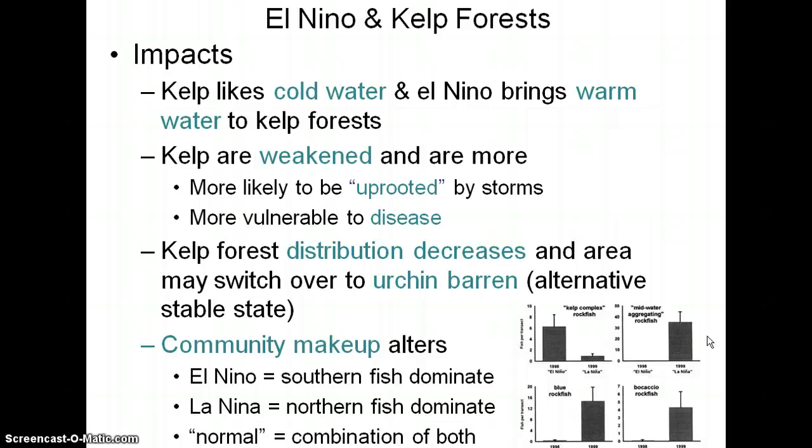Some kelp forests may actually switch to an urchin barren — that's the alternative stable state. The makeup of the community will also change: during El Niño, you get a lot of warmer-water southern fish that will come up into kelp forests. Then in La Niña, you'll get colder-water northern fish that come down and dominate. Normally you get a combination of both, but La Niña brings colder water down.